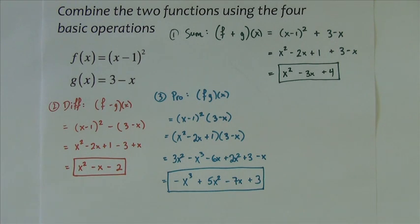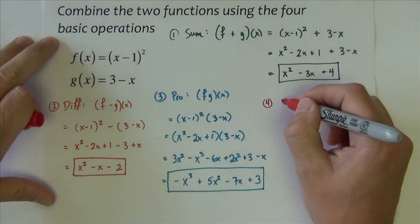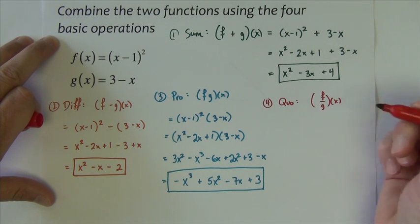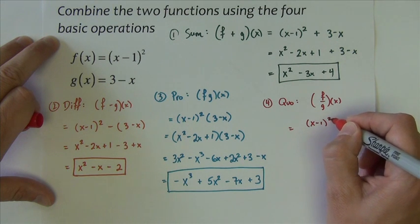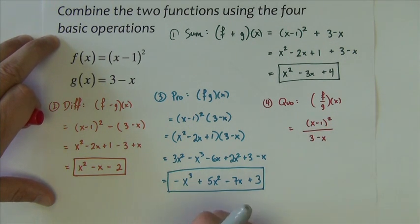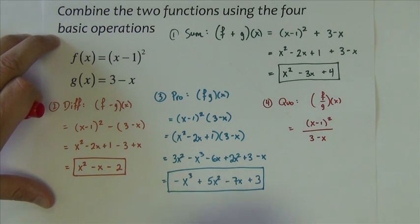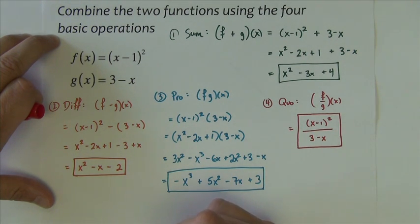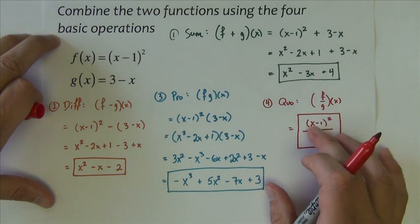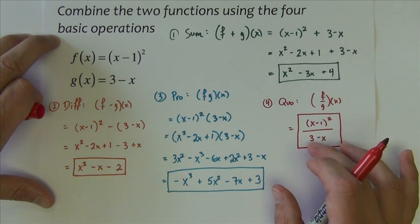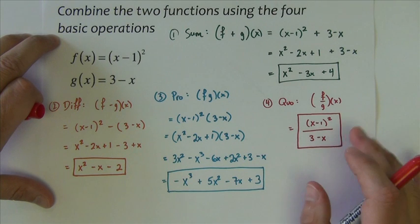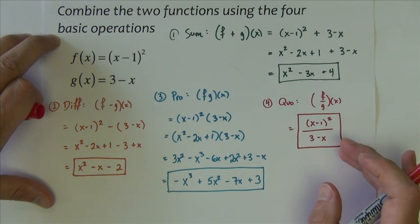And finally, last on the list is the quotient. So for the quotient, I want f divided by g of x. So I want x minus 1 squared divided by 3 minus x. Now really with quotients, oftentimes when you set them up, they're finished. And that's the case in this particular problem. This happens to be the answer. Because generally with quotients, what we're looking to do is get it into a factored form, which the numerator is already in a factored form. The denominator cannot be factored. And once we get it into a factored form, we see if we can reduce any common factors from the numerator and denominator of the fraction. In this case, nothing reduces, which means just setting it up is the answer.